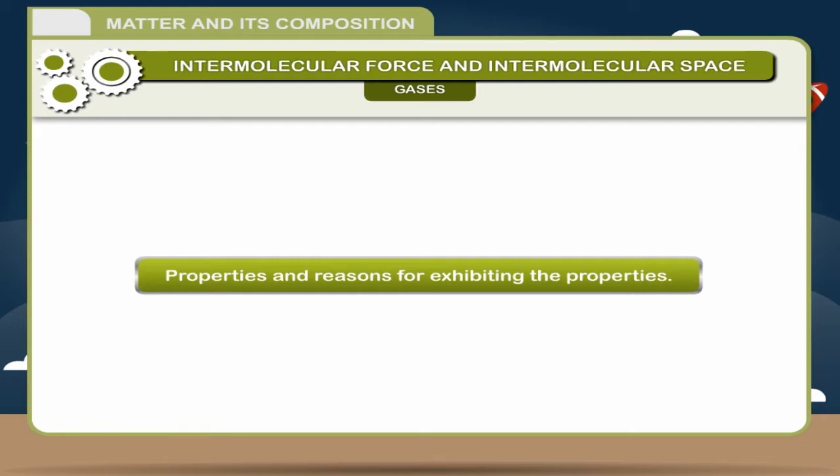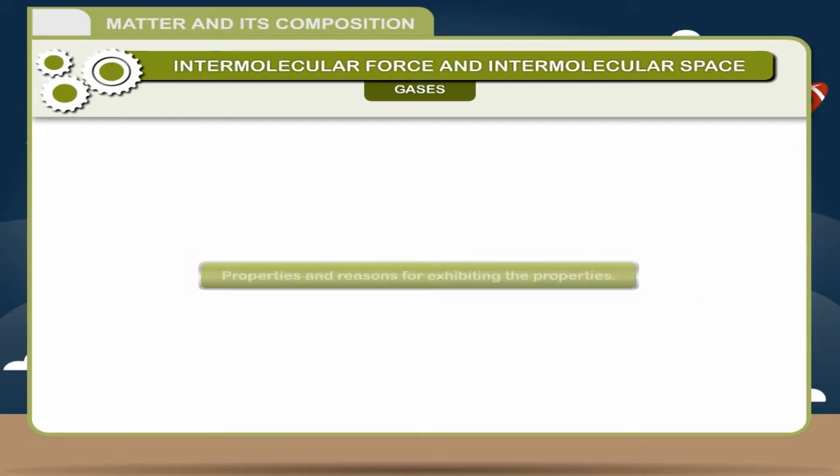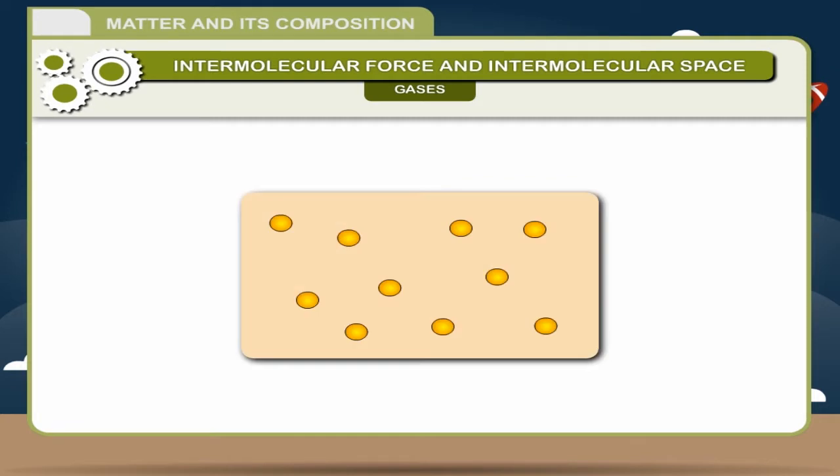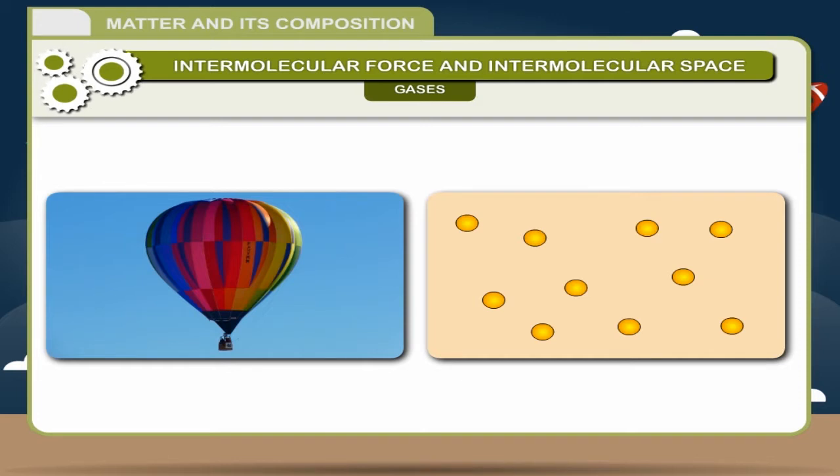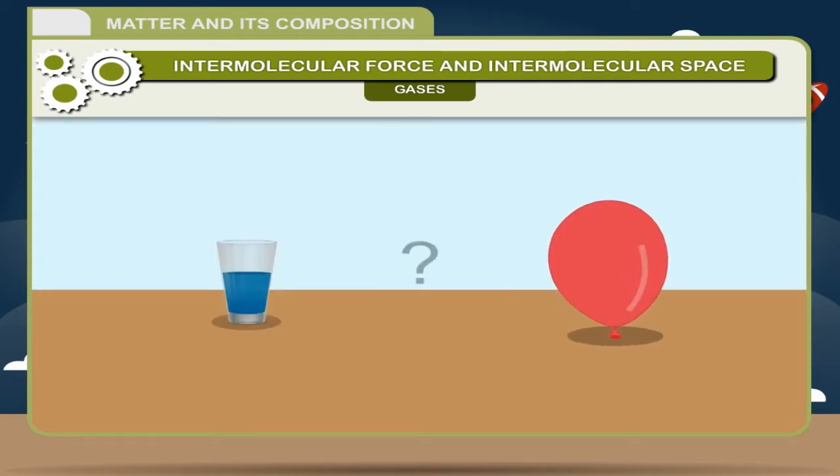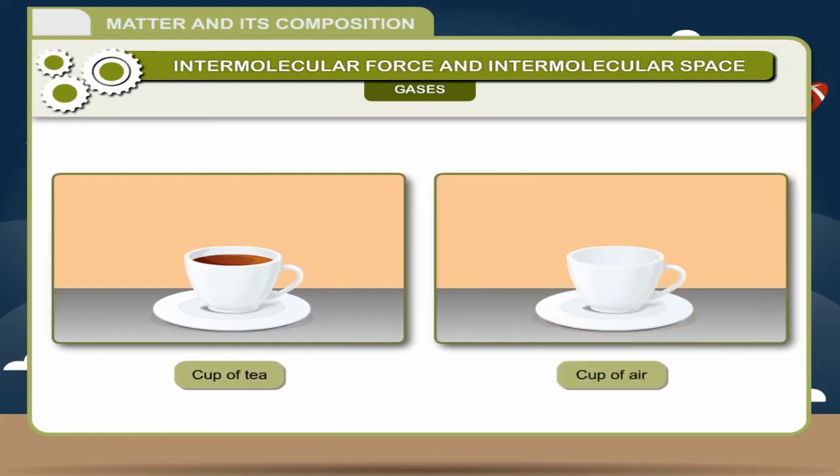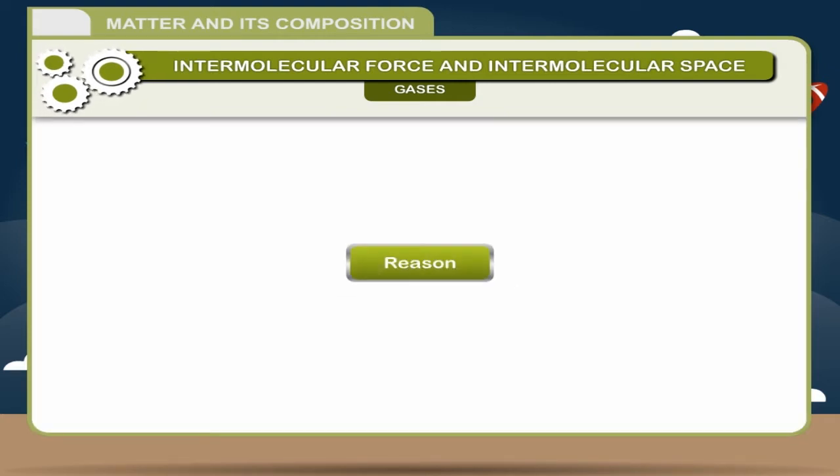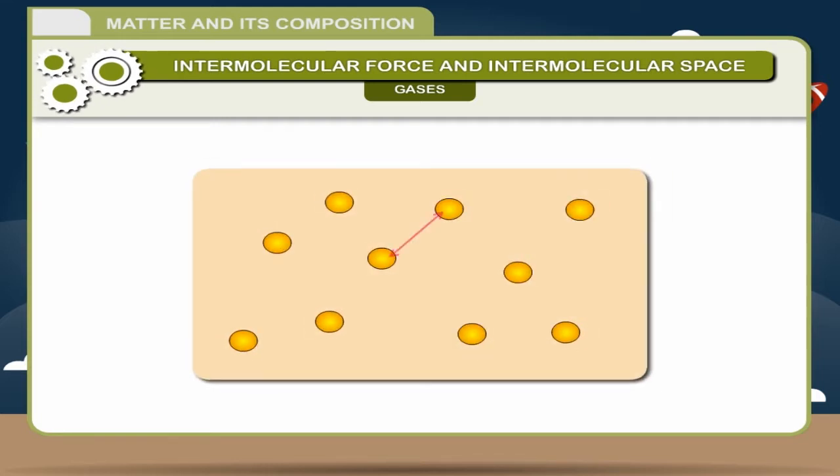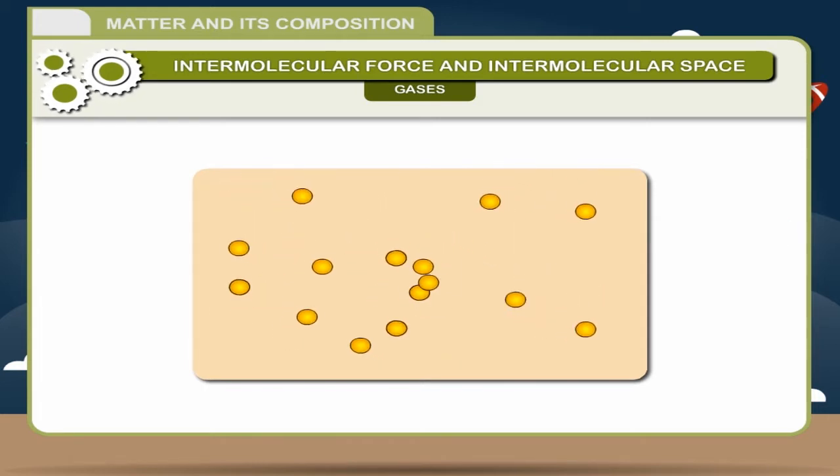Properties: Gases have no definite shape. They take the shape of the containing vessel. Then, what is the difference between gases and liquids? Gases occupy every bit of space available. So, while you can say, give me a cup of tea, but you cannot say, give me a cup of air. Reason: As there is negligible or very less attraction between gaseous molecules, they freely move anywhere.